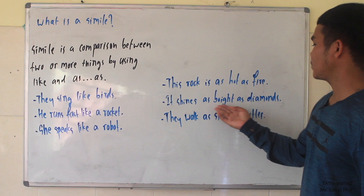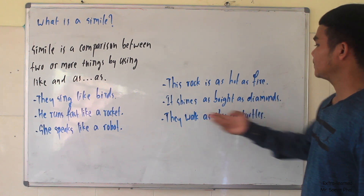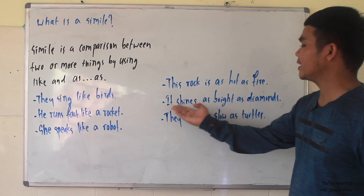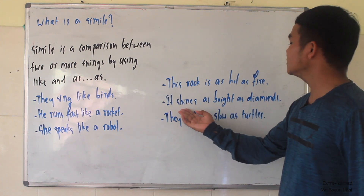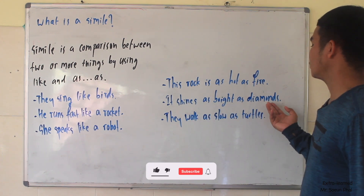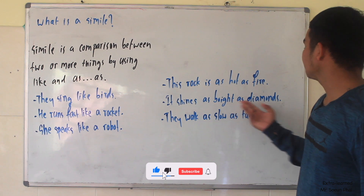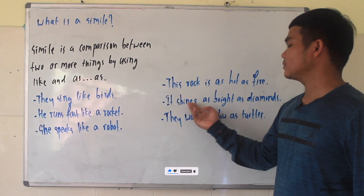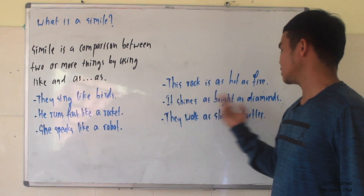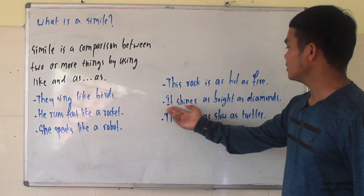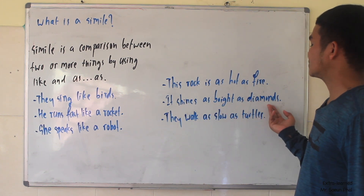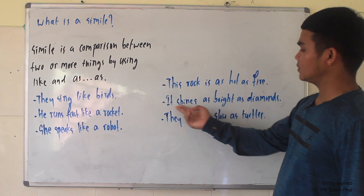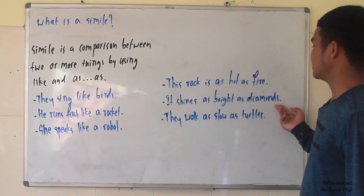Another example: 'It shines as bright as diamonds.' In this sentence, we compare how brightly it shines to diamonds. Normally, a diamond is bright, so that's why they say it shines like a diamond — meaning it shines very brightly. That's why they say 'it shines as bright as diamonds,' using 'as-as' to compare between these two things.